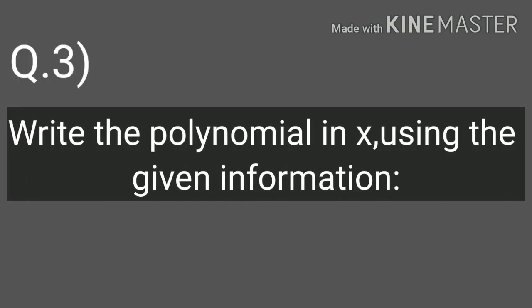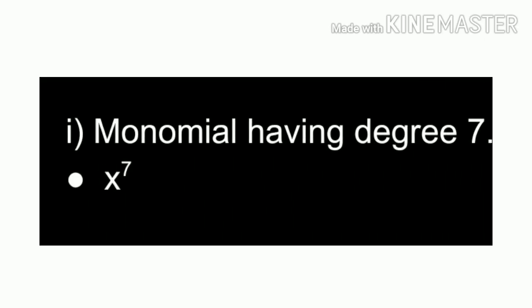Now Question 3: write the polynomial in x using the given information. Question 1: monomial having degree 7. We have to write only one term and the degree should be 7, so the answer is x⁷.